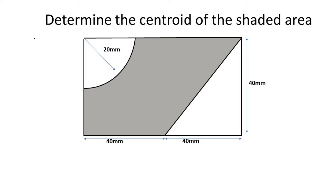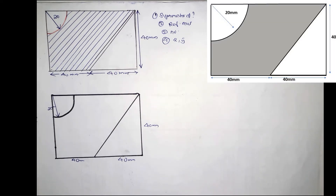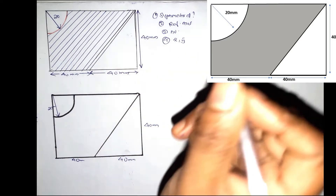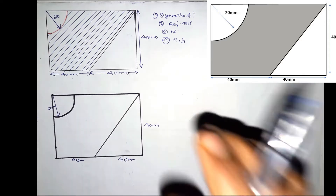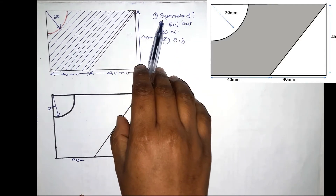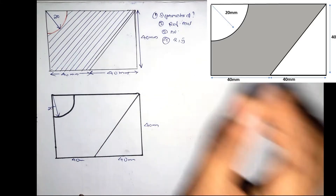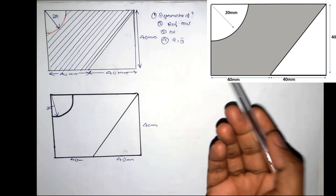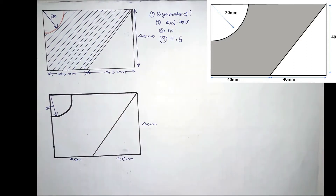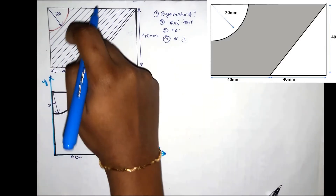Question 1: Determine the center of the shaded area. We need to find the centroid of this shaded area. First, we need to check if our figure is symmetrical. We need to check the x-axis and y-axis as the reference axis.